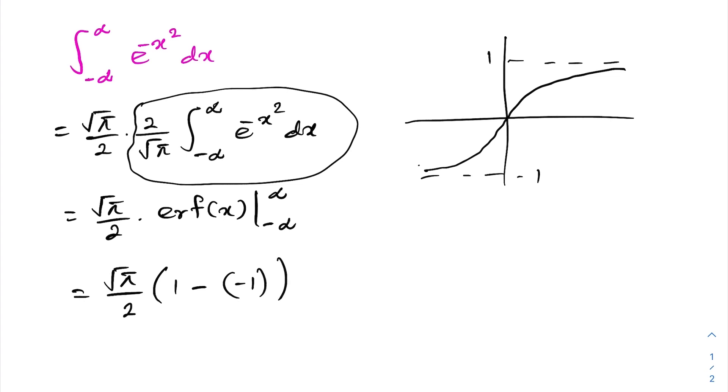1 minus minus 1, we know 2 gets cancelled. So, the answer is the square root of pi.